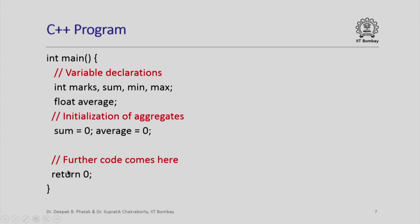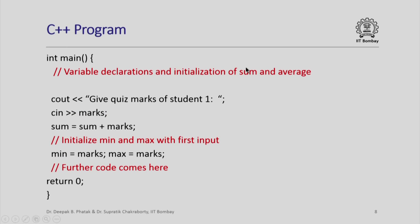If I want to translate this flowchart into a C++ program, we start with the main function, declaring variables: marks, sum, min, and max as integer variables. Even if all marks are integers, the average could have a fractional part, so we declare average to be of float data type. We initialize the aggregate sum and average to zero. Then we print the message 'give quiz marks of student one', read the marks, add them to sum, and since this is the first student's marks, we initialize both min and max with marks itself.